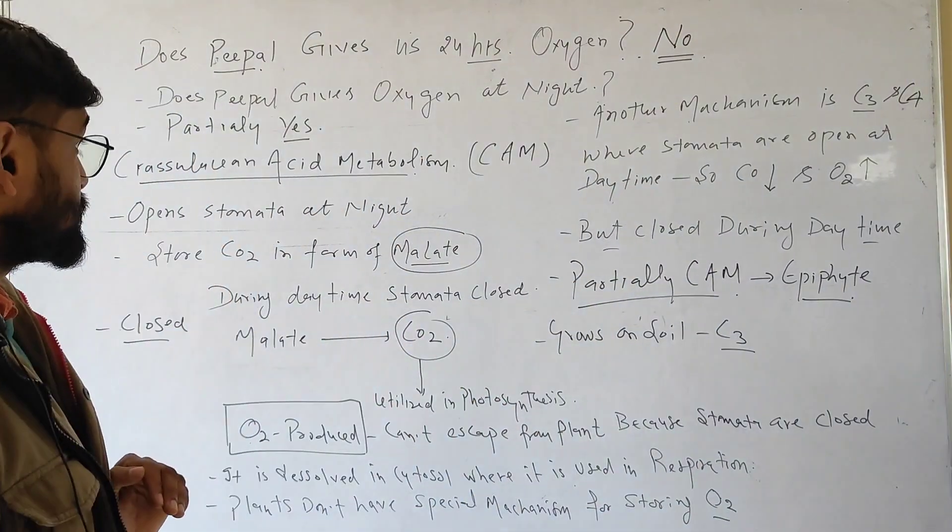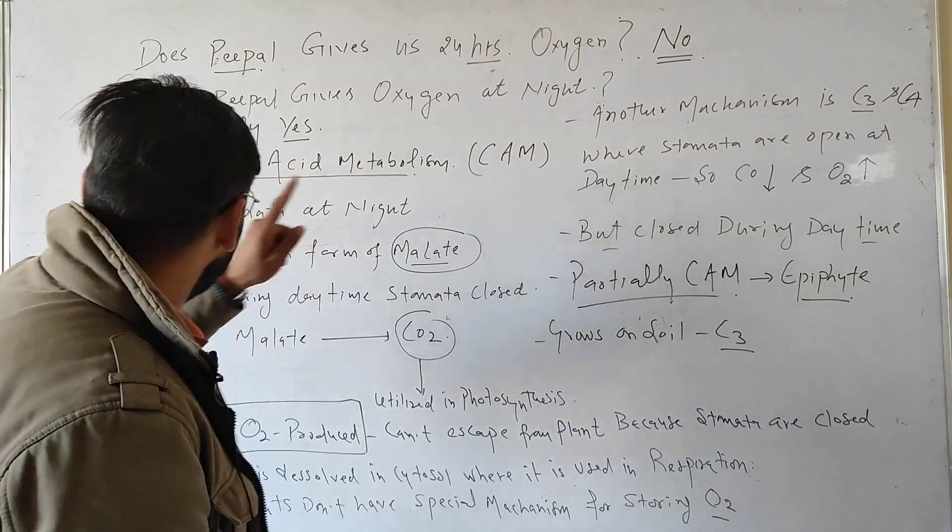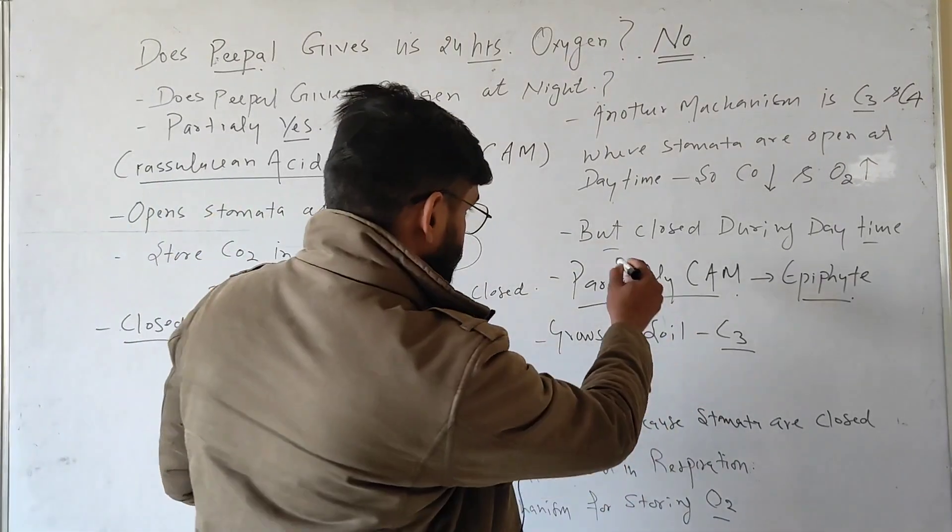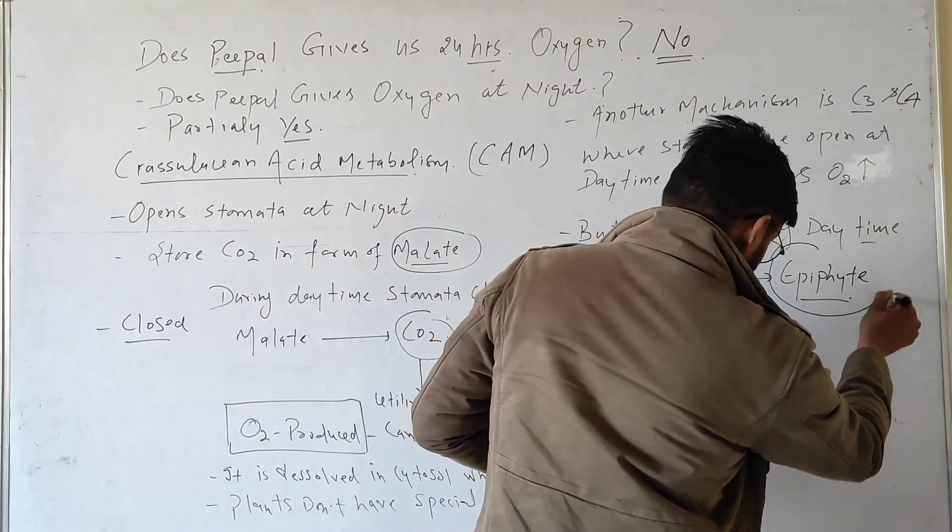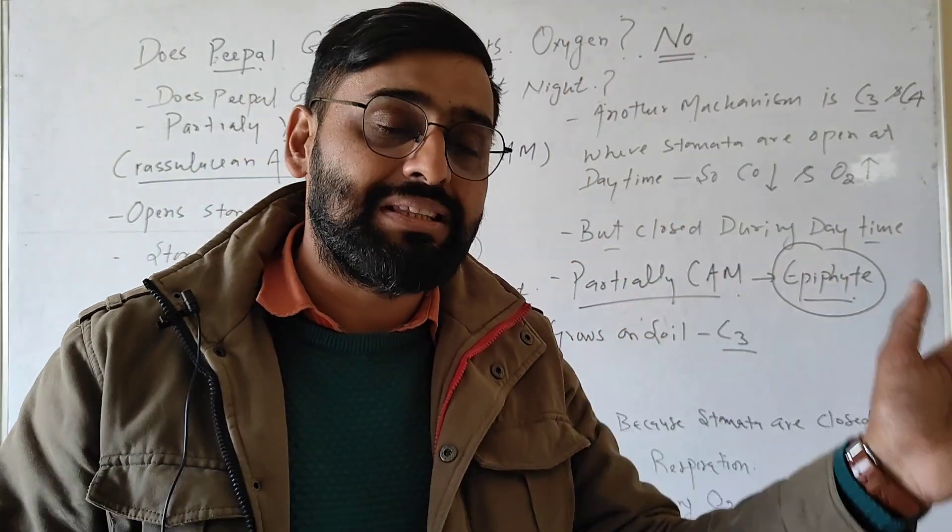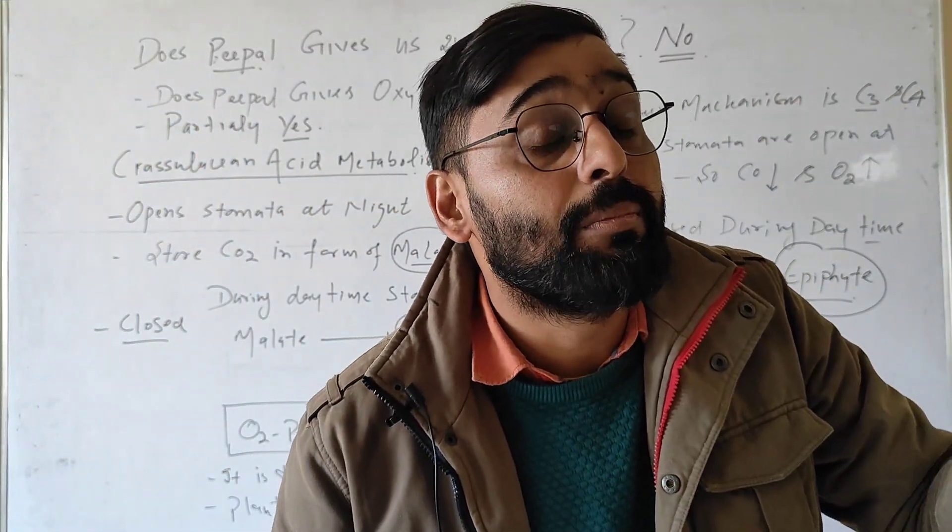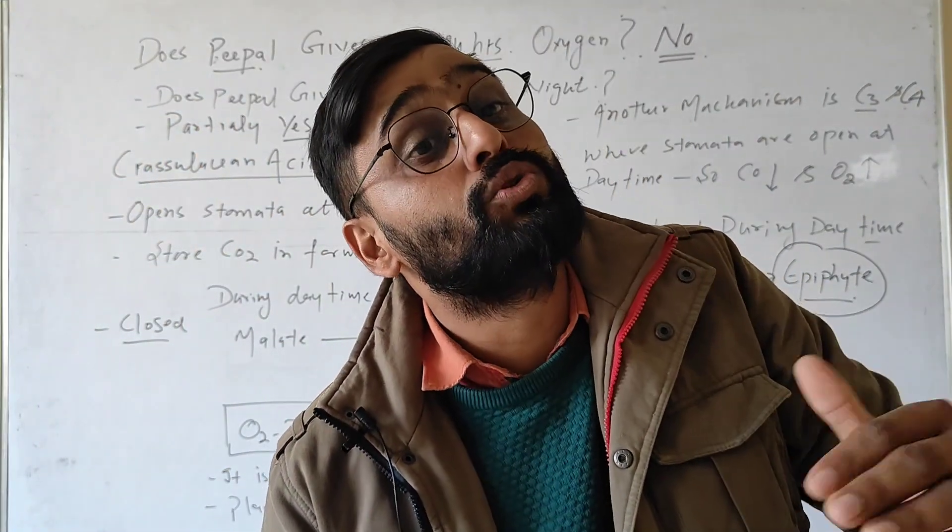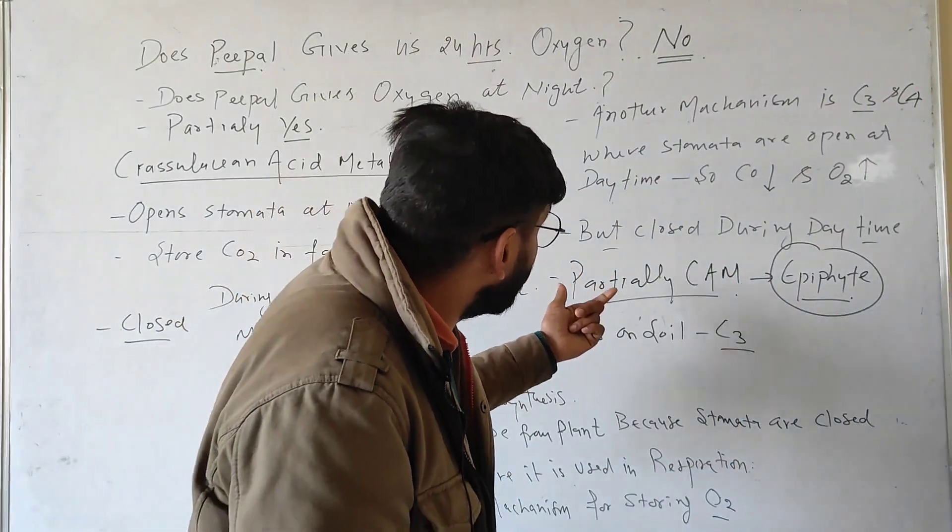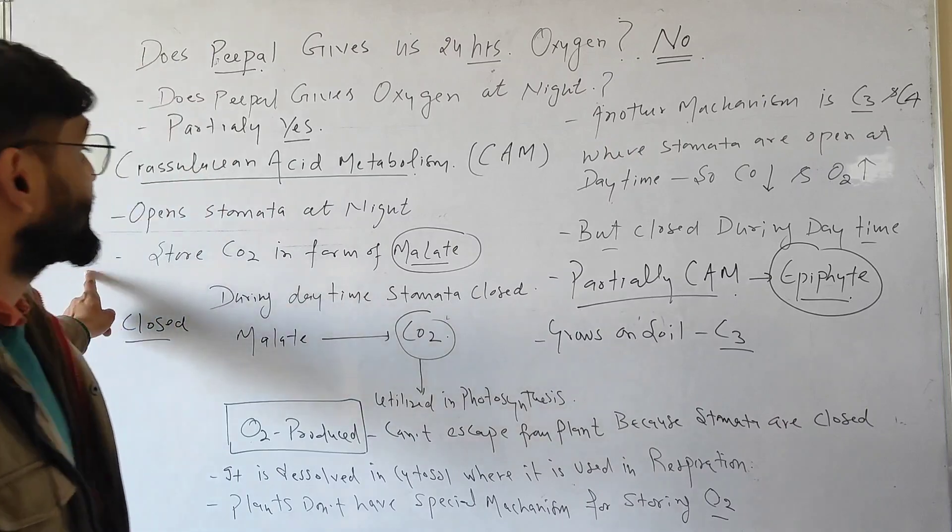Because this peepal plant is CAM when it is epiphyte. When peepal grows on another plant, we must have seen that peepal grows on another plant. In that case, that peepal plant will be called epiphyte. The plant that grows on another plant. So when peepal grows on another plant, then it will act as CAM.